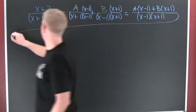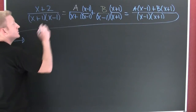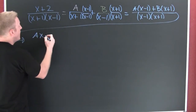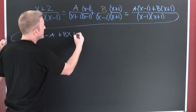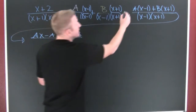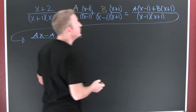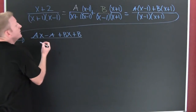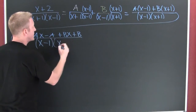When I do, I'm going to get A times X minus one plus B times X plus one, all over my common denominator, X minus one times X plus one. And I have AX minus A plus BX plus B, all over that common denominator, X minus one times X plus one. That squeaky marker reminds me not to forget to distribute to both terms in that binomial.